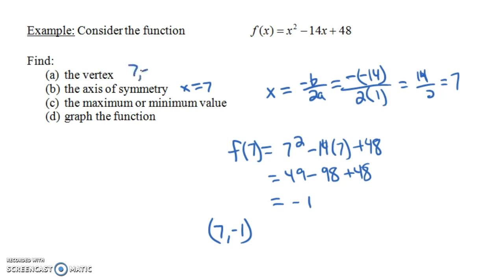So the vertex is 7, negative 1. The axis of symmetry is x equals 7. It's not just the number 7. It's x equals 7 because it's the equation of a vertical line, x equals 7. Find the maximum or minimum value. Well, notice minus 1 is going to be our maximum or minimum value. The question is, which one is it, a max or a min? Well, since we have a positive leading coefficient for our function, the graph opens up like this. So the minus 1 is going to be the minimum value. There's not going to be a maximum. We are going to have a bottom of the hill here, right? We'll have a lowest point. And that lowest point will be minus 1.